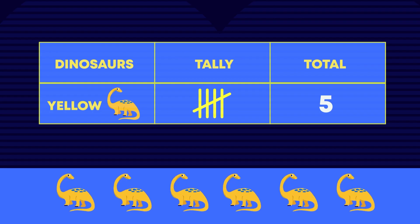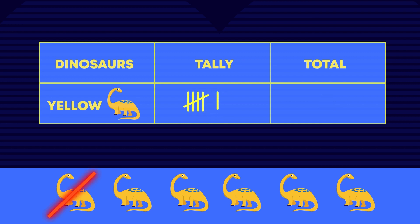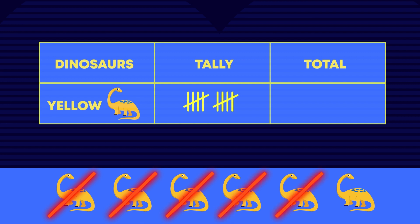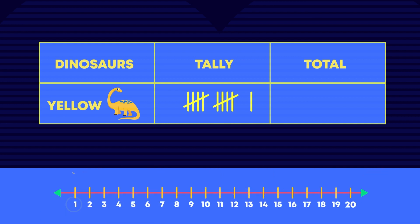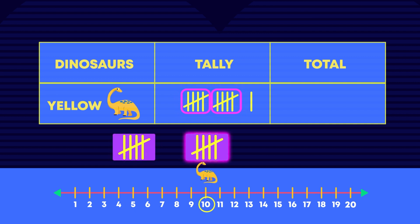The rangers just spotted six more yellow dinosaurs that we need to add to the telechart. One, two, three, four, five. That's another five, so we have to cross it. We need one more telemark. How many yellow dinosaurs did they see altogether? Eleven in total? Well done.